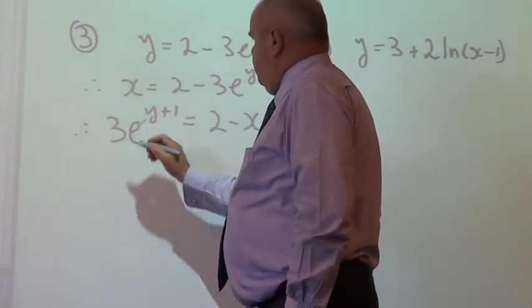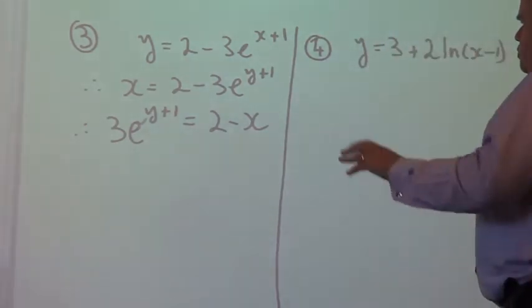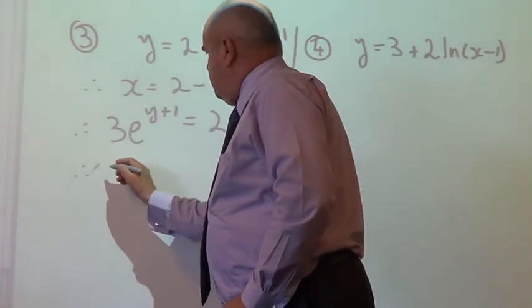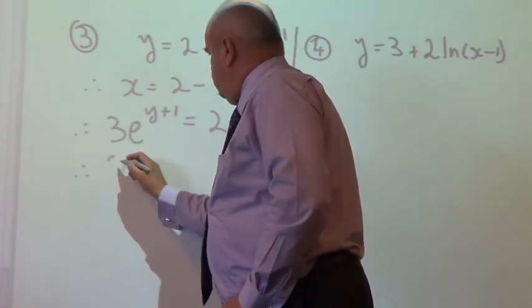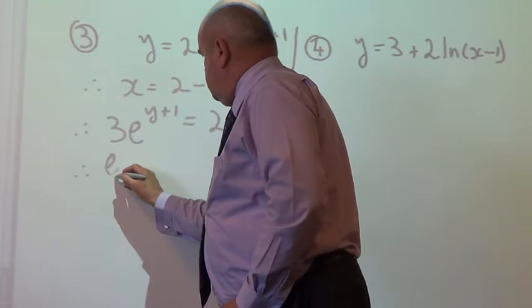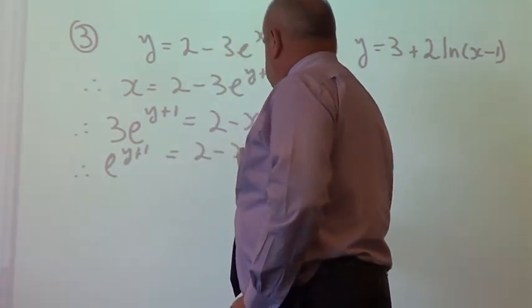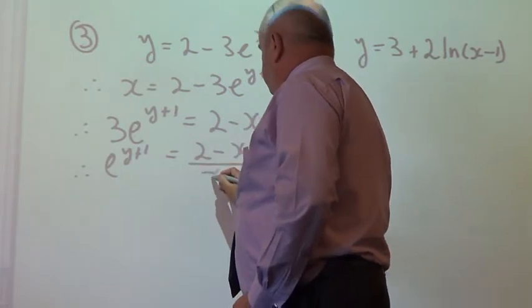Now, the next step would be, we've got a couple of choices, but the sensible one would be to divide both sides by 3. So, therefore, e to the y plus 1 equals 2 minus x, all over 3.